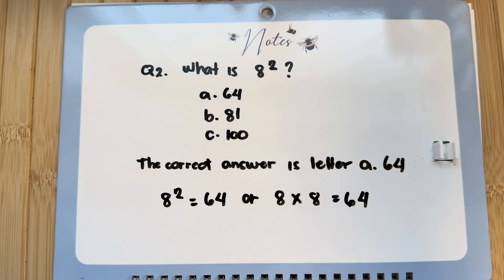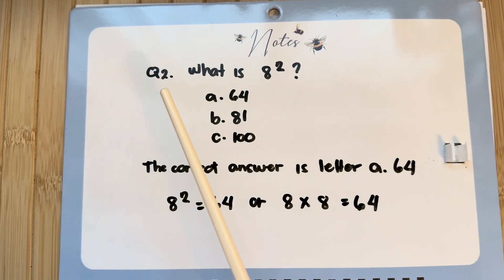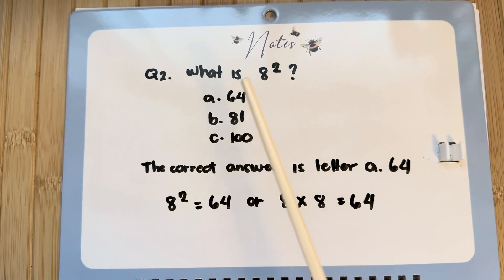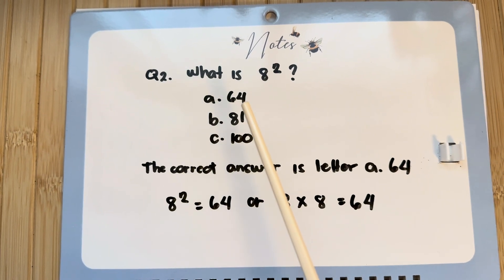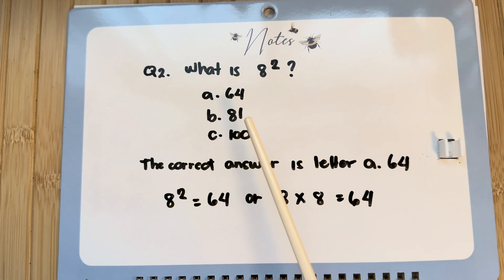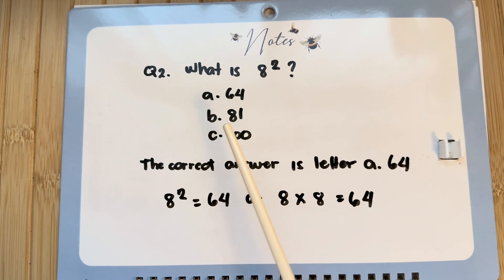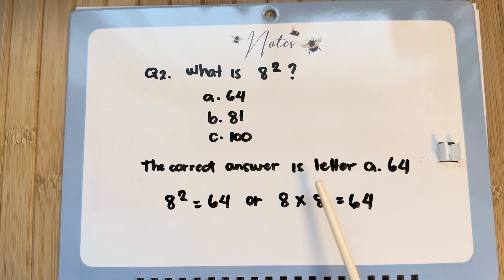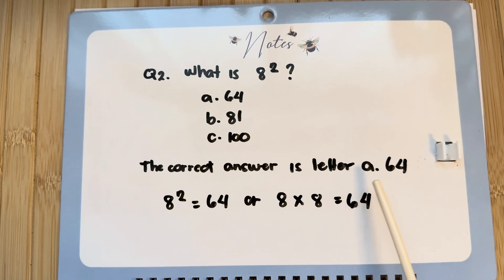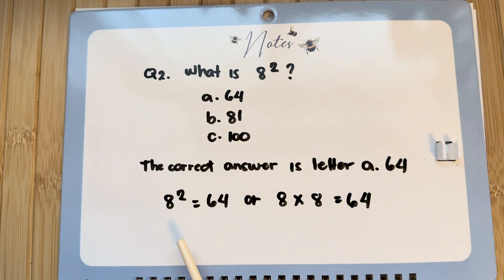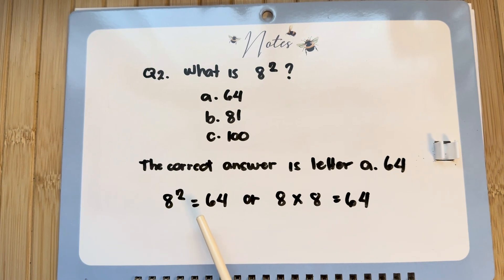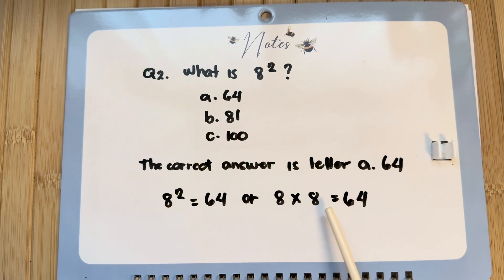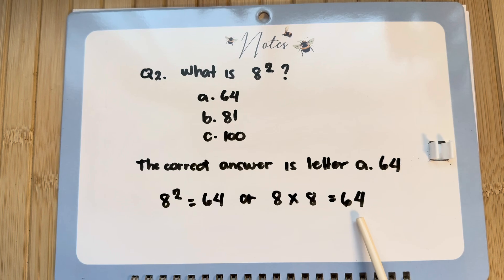Question number 2: What is 8 squared? Is it letter A, 64? B, 81. Or letter C, 100? The correct answer is letter A, 64. 8 squared is equals to 64, or 8 times 8 is equals to 64.